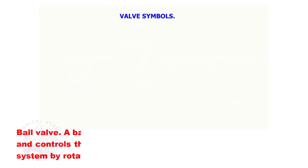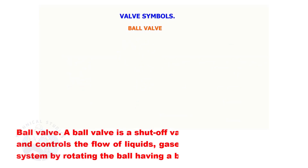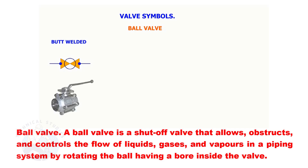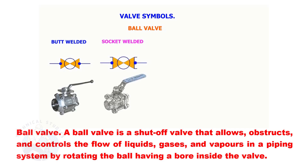Ball Valve. A ball valve is a shut-off valve that allows, obstructs, and controls the flow of liquids, gases, and vapors in a piping system by rotating the ball having a bore inside the valve.